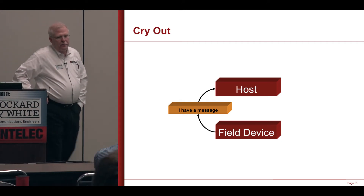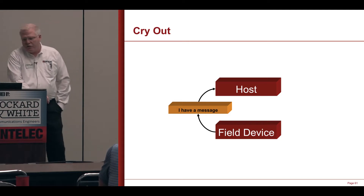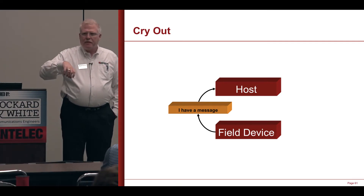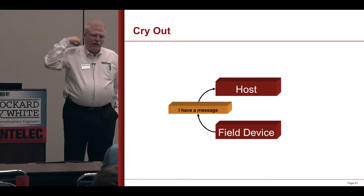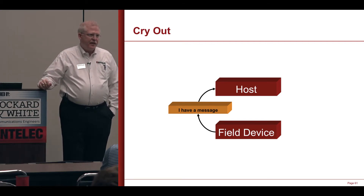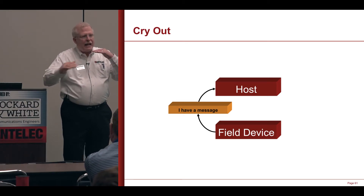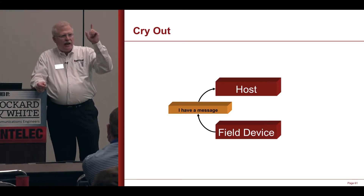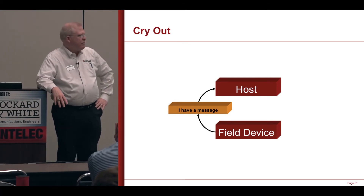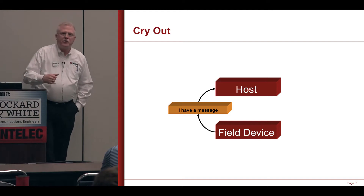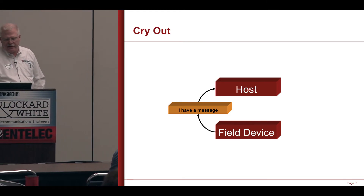The other idea is CRYOUT. The Fisher ROC has this, and many other devices have it. In poll response protocols, the host is the only one that can talk — he issues a poll and says, 'RTU100, I need these addresses.' What CRYOUT does is it allows the remote device to say, 'Hey, Mr. Host, I have something you need to know about,' and then the host will put that device to the top of the queue and poll it next. This has to be supported in both the field device and the host. CRYOUT is really handy for things like a critical upset — for example, over-pressuring the inlet of a gas plant or high fluids at the inlet of a gas plant.